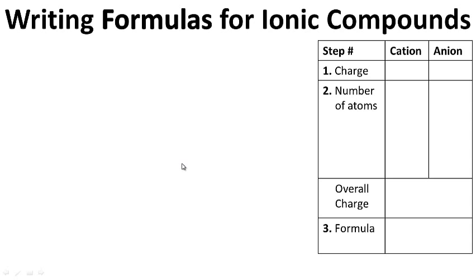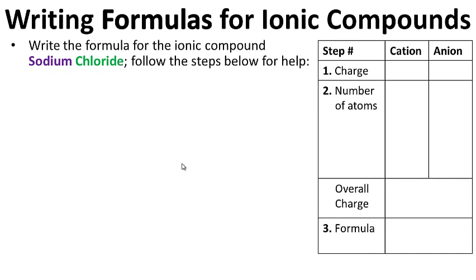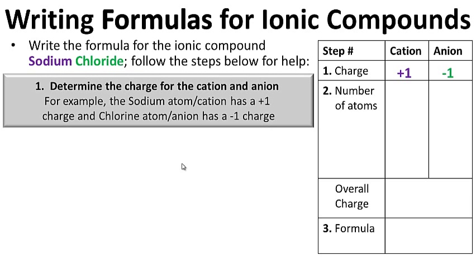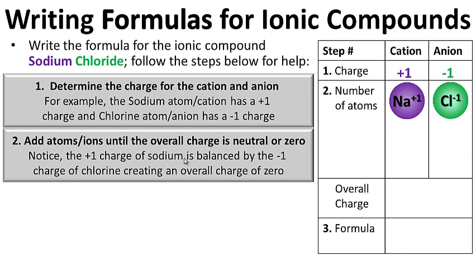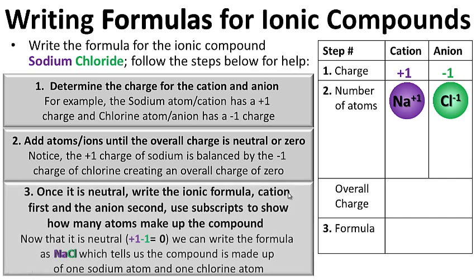Writing formulas for ionic compounds. Let's try writing the formula for sodium chloride. Step one: determine the charge for the cation and anion. Sodium has a plus-1 charge and chlorine has a minus-1 charge. Step two: add atoms or ions until the overall charge is neutral or zero. By adding one sodium and one chlorine, the plus-1 is balanced out by the minus-1 — overall charge is zero. The cation is written first and the anion second, and we use subscripts to show how many atoms make up the compound. So we write NaCl — one sodium atom and one chlorine atom.